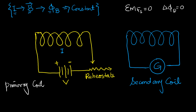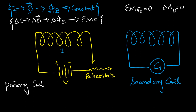Whenever the current changes, that change in current results in a change in magnetic field, and the change in magnetic field results in a change in magnetic flux, which means there will be induction of an electromotive force. It is very important to understand: in order to induce electromotive force and produce induced current, there must be a change in current in the primary coil. The change in current causes a change in magnetic field lines, which results in a change in magnetic flux, and hence induced EMF is produced in the secondary coil.